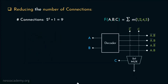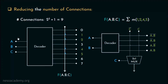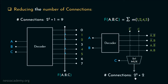Previously, the number of connections was 9. Now, the number of connections is 2² (the output lines of the 2-to-4 decoder) plus 2 input lines of the 2-by-1 multiplexer, giving 4 + 2 = 6 connections, which is less than the previous arrangement. So yes, with the help of a multiplexer, we can reduce the number of connections in a ROM matrix.